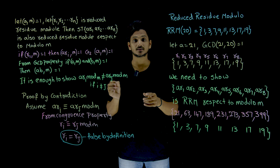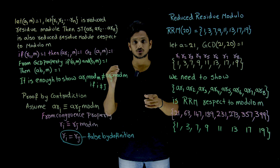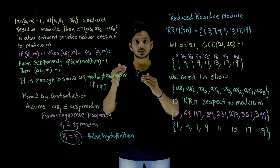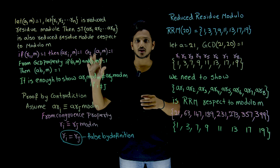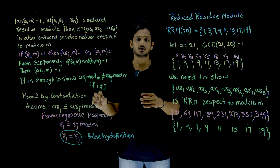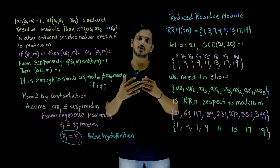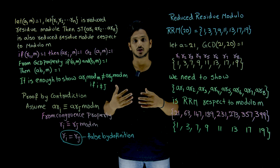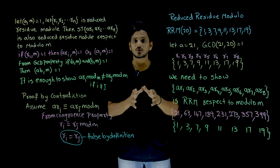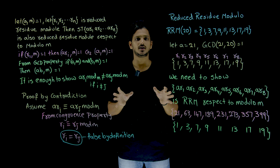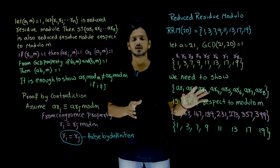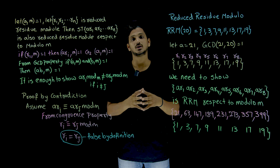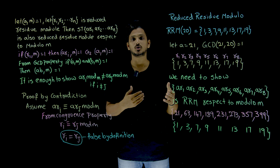In our last class we clearly discussed the definition of reduced residue modulo set. Please watch that class and come back here, because understanding the definition is very important to understand this theorem. In our previous classes we also discussed some properties of GCD and congruence, which we are going to use here. Before we move on to the theorem, let's try to understand it in a numerical way. We will also use this theorem in our next class when we discuss Euler's theorem.